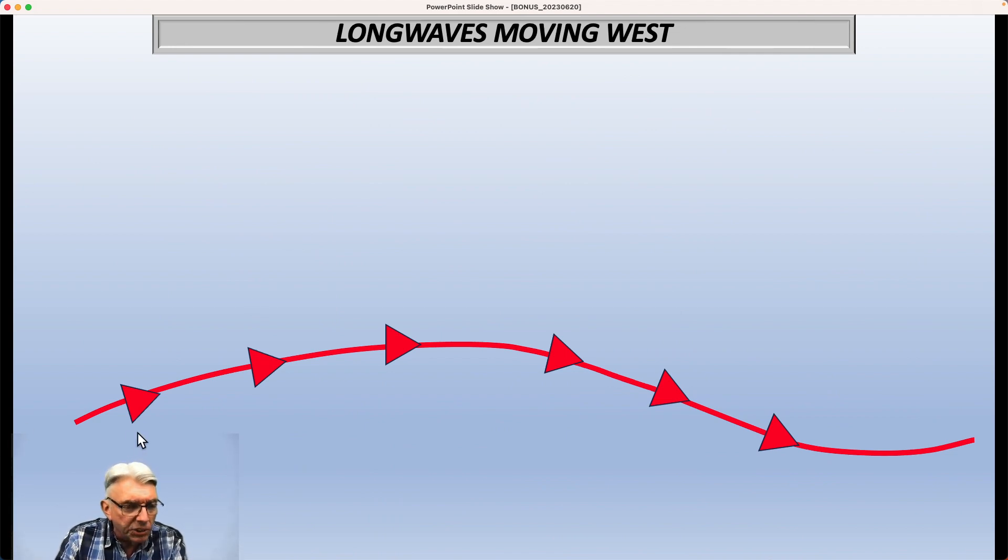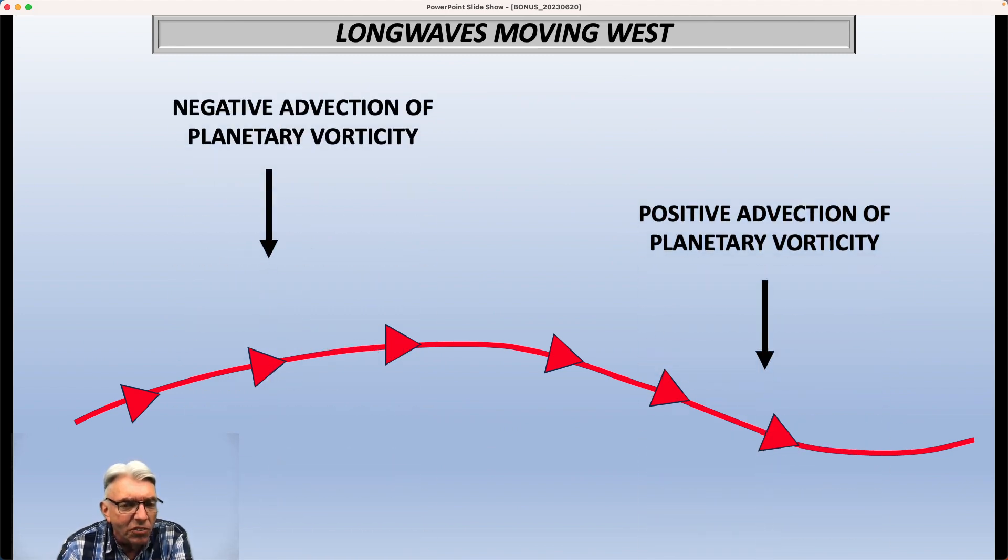So if you have a long fetch of a flow that is coming at least somewhat from the south, which this is right in here, then what you're doing is you're advecting lower values of vorticity, planetary vorticity, toward the north. So what happens in a situation like that is that the flow or this line here, if you will, this flow actually begins to shift northward because we're moving higher values of lower vorticity northward.